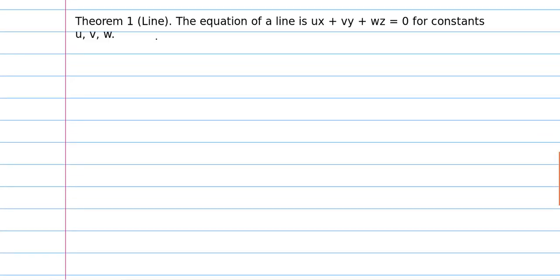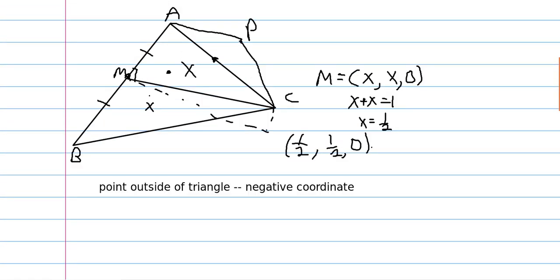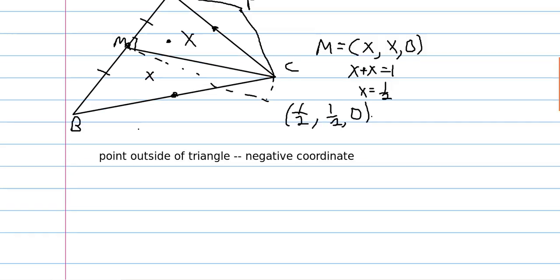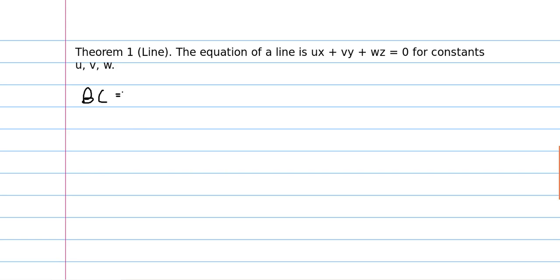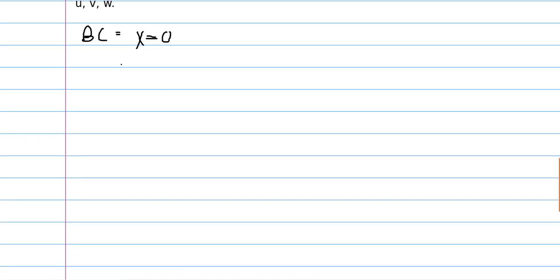So we saw that the equation of line BC. Well, we knew that on this triangle, if a point was on BC, then one of its coordinates was 0. So we knew that x is equal to 0, but is that all we know? Well, let's see.